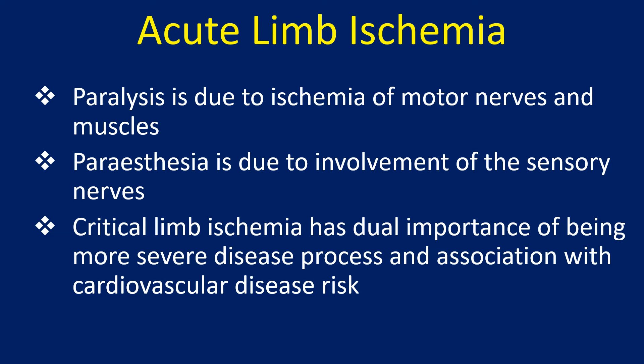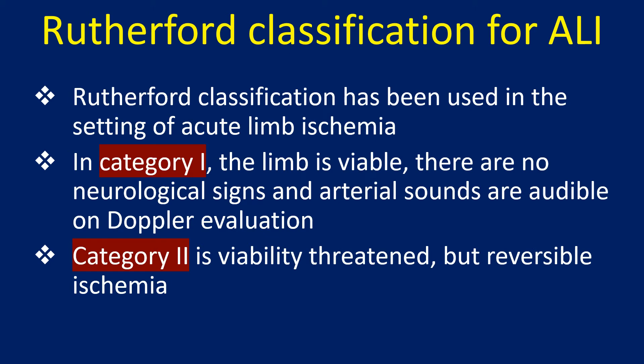Critical limb ischemia has dual importance: being a severe disease process and its association with cardiovascular disease risk. The Rutherford classification is used in acute limb ischemia. In Category 1, the limb is viable, there are no neurological signs, and arterial sounds are audible on Doppler evaluation.